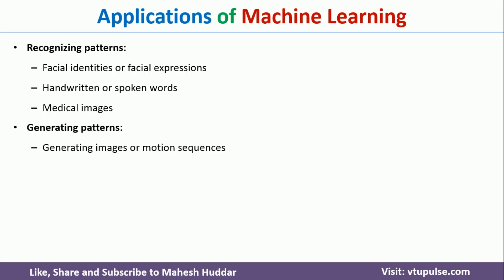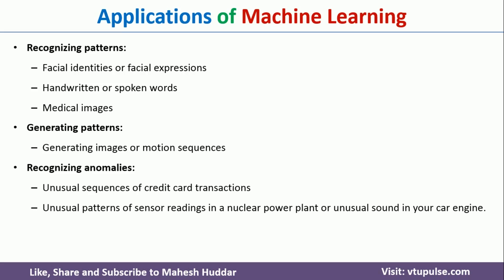The second application area is generating patterns — for example, generating images or motion sequences. As a person dictates some scenario, images and motion sequences are generated based on that. It is heavily used in crime detection, to regenerate a crime scene or generate a person's image. Another area is recognizing anomalies: credit card fraud detection, insurance fraud detection, anomalies in a nuclear power plant, anomalies in a CRAR engine, and so on. For detecting such things, machine learning is the way to go.